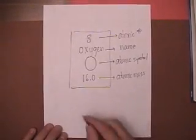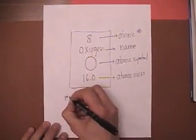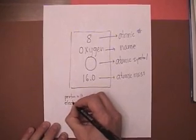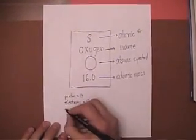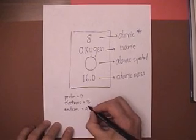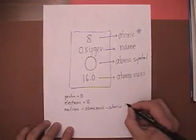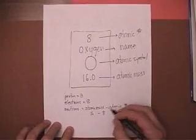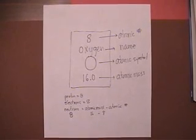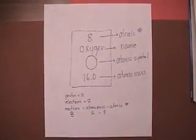The other information you can gather is that if you have eight as your atomic number, that means you have a proton count of eight. If you have eight protons you also have eight electrons. For neutrons, you go atomic mass minus atomic number — in this case sixteen minus eight — so your neutron count is eight. That's about all the information we can get from this right now; that's just your general information for the periodic table.